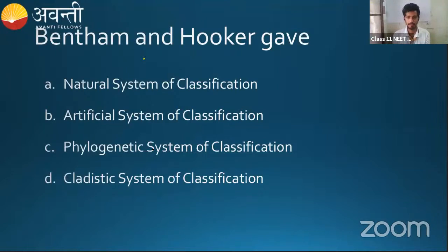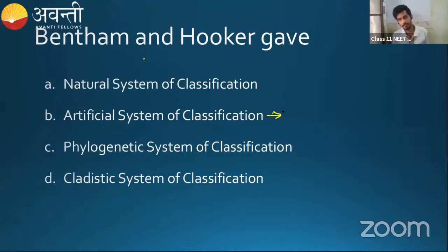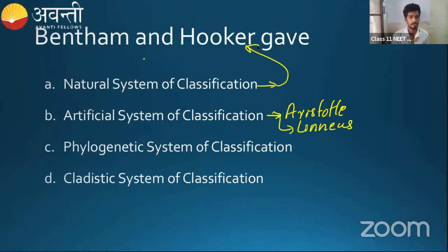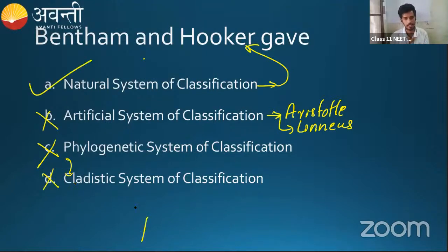Ending the poll now and sharing the results: 81 percent chose option A, seven percent B, ten percent C, two percent D. This is one of the easiest questions. Who introduced the artificial system of classification? Aristotle introduced it in the starting phase, then Linnaeus also followed his path. Bentham and Hooker gave the natural system of classification. Cladistics is normally based on the phylogenetic system. So the correct answer is option A.